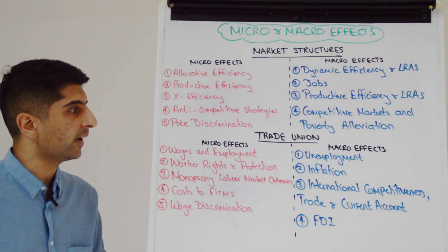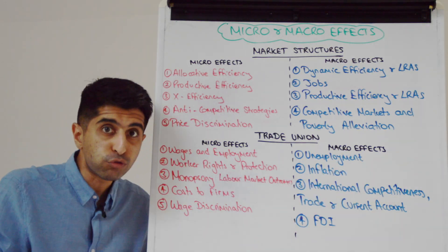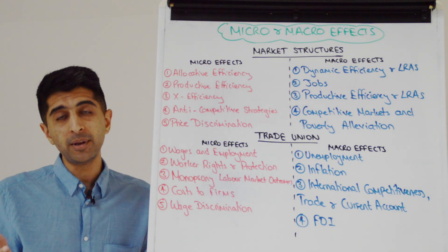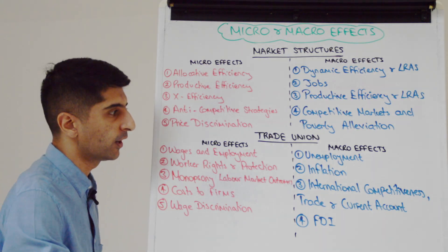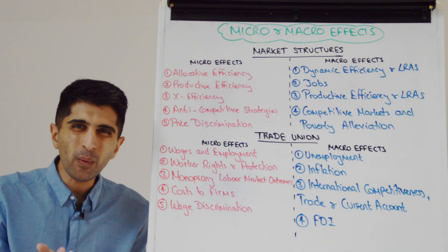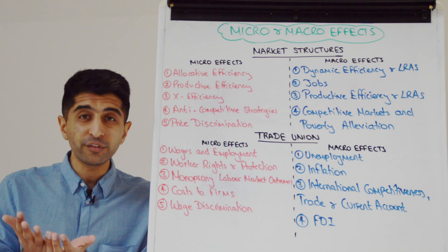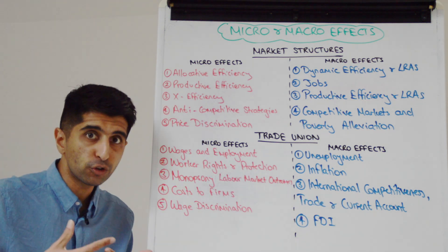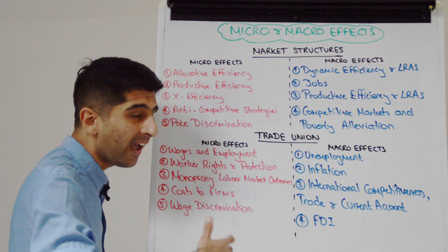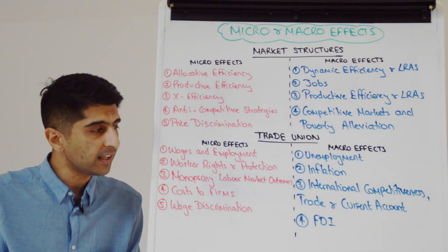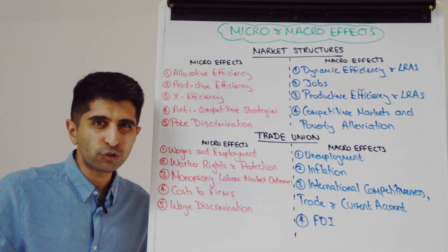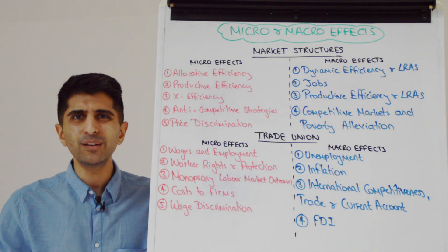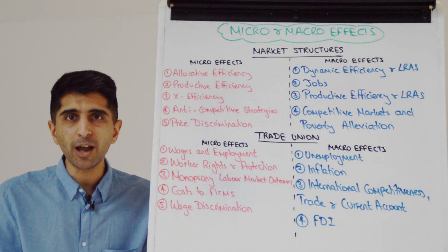There's also the macro effects of a trade union: how they could raise unemployment in a traditional labour market, but actually reduce unemployment if you have a lot of monopsony labour markets in your economy. They also impose costs on firms that could drive up prices and inflation, worsen international competitiveness, worsen the current account deficit, and strong trade unions can actually deter FDI. You can see how simple that is.